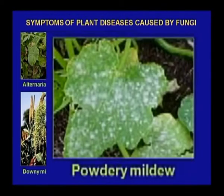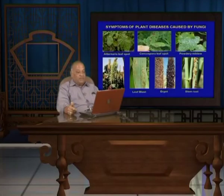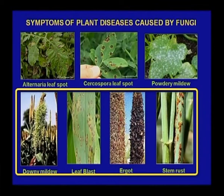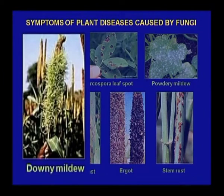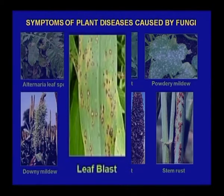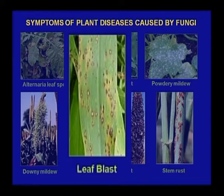Cercospora leaf spot is causing disease in groundnut. Third is powdery mildew — you can see the powdery patches on the leaves of the cucurbits. I am also giving examples of pearl millet diseases, which are very important in mostly the desert areas. Downy mildew, which is caused by Sclerospora graminicola — as you see in the picture, the ear heads of the downy mildew are being transformed into leafy structures. Secondly, it is the leaf blast, a very important disease nowadays, infecting almost all newly developed lines of bajra.